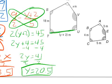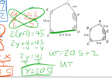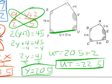And lastly, they wanted to know what this distance UT was. Well, it's equal to Y plus 2. So, I can just say 20.5 plus 2 is equal to UT. So, UT equals 22.5. No problem.